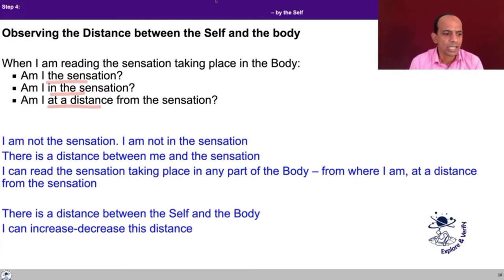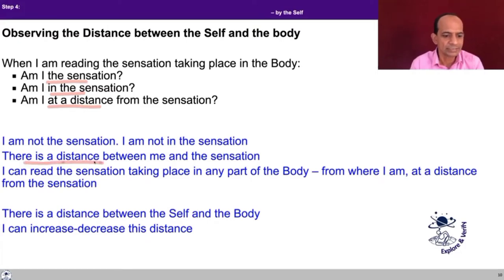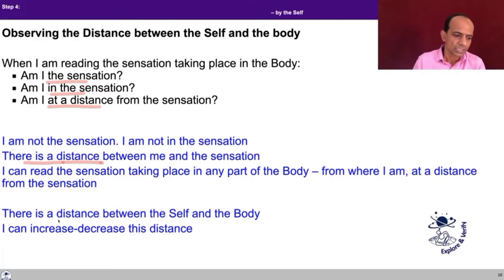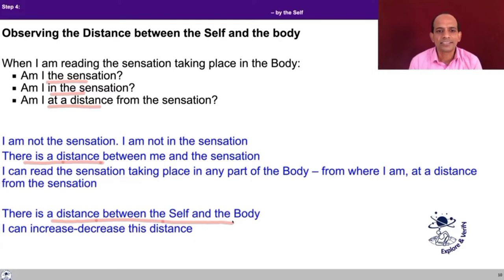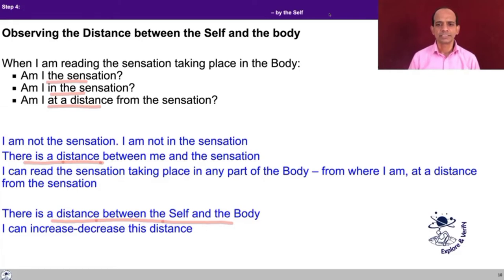You can conclude here that I am not the sensation, I am not in the sensation, there is a distance between me and the sensation. I can read the sensation taking place in any part of the body from where I am at a distance from the sensation. While observing this, you can also go further to observe that there is a distance between the self and the body. I can increase or decrease that distance. You are occupying the same point in space where the body is, but you are at a distance from the body — and that's how you can increase or decrease the distance from the body.